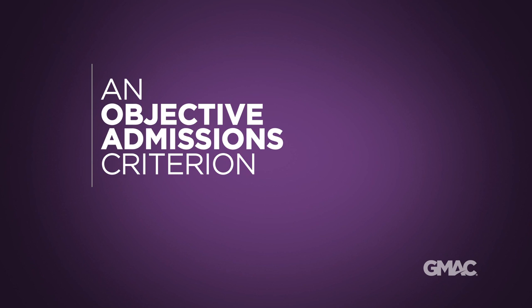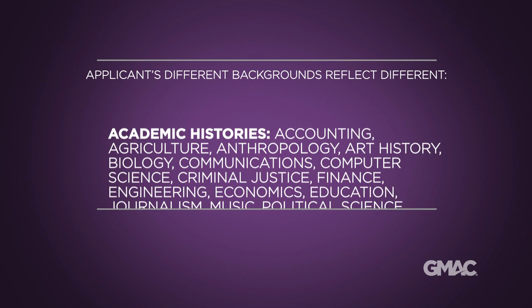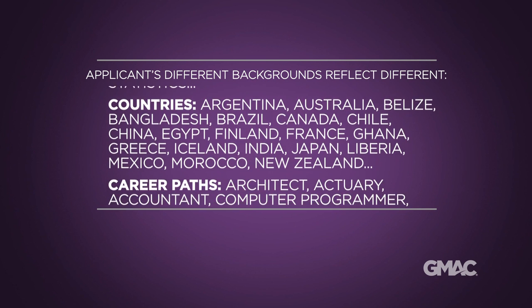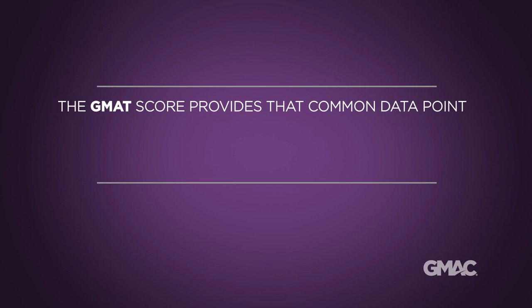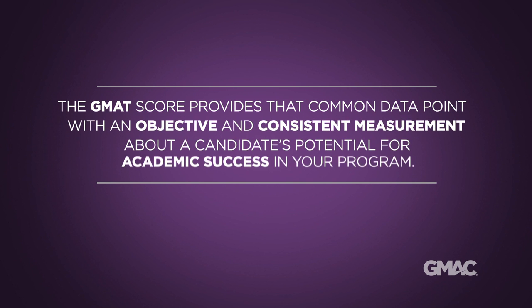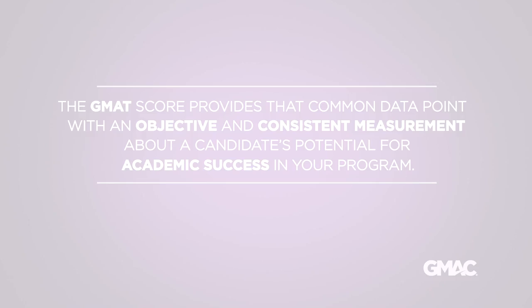Applicants come from a wide range of backgrounds reflecting differences in academic histories, countries, cultures, career paths and levels of work experience. With so many variables that are difficult to compare, you need additional objective information about your applicants' potential for academic success. The GMAT score provides that common data point with an objective and consistent measurement about a candidate's potential for academic success in your program. From there, you can spend more time evaluating each candidate's unique qualities and how they match your school's distinctive program characteristics.